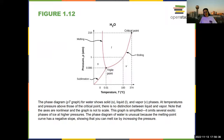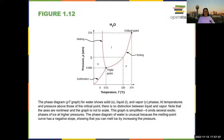We talk about the phase diagram of different molecules or atoms. Here you can see the phase diagram of water, where at low temperatures you have a solid. This axis is temperature and this is pressure, and one atmosphere is regular atmospheric pressure. At one atmosphere, as you increase temperature, water goes from solid to liquid to gas.